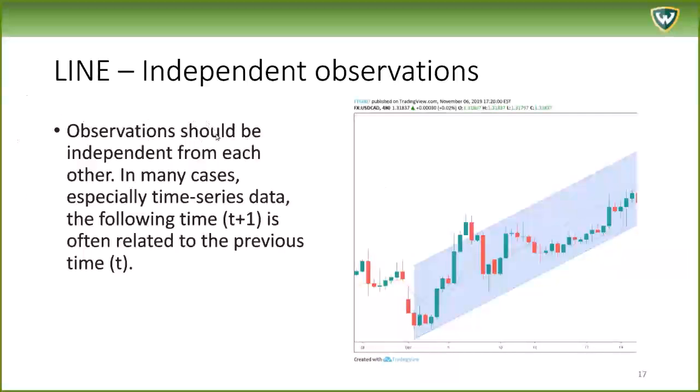Independent observations. Observations should be independent from each other. In many cases, especially time series data, the following time is often related to the previous time. We've got to be careful when we're having time series data. For example, when we're talking about stock market data, the value of a stock on a particular day, like December 10th, is related to the value of the stock on the previous day on December 9th. If you have this kind of lack of independence on your X points, linear regression is not appropriate.